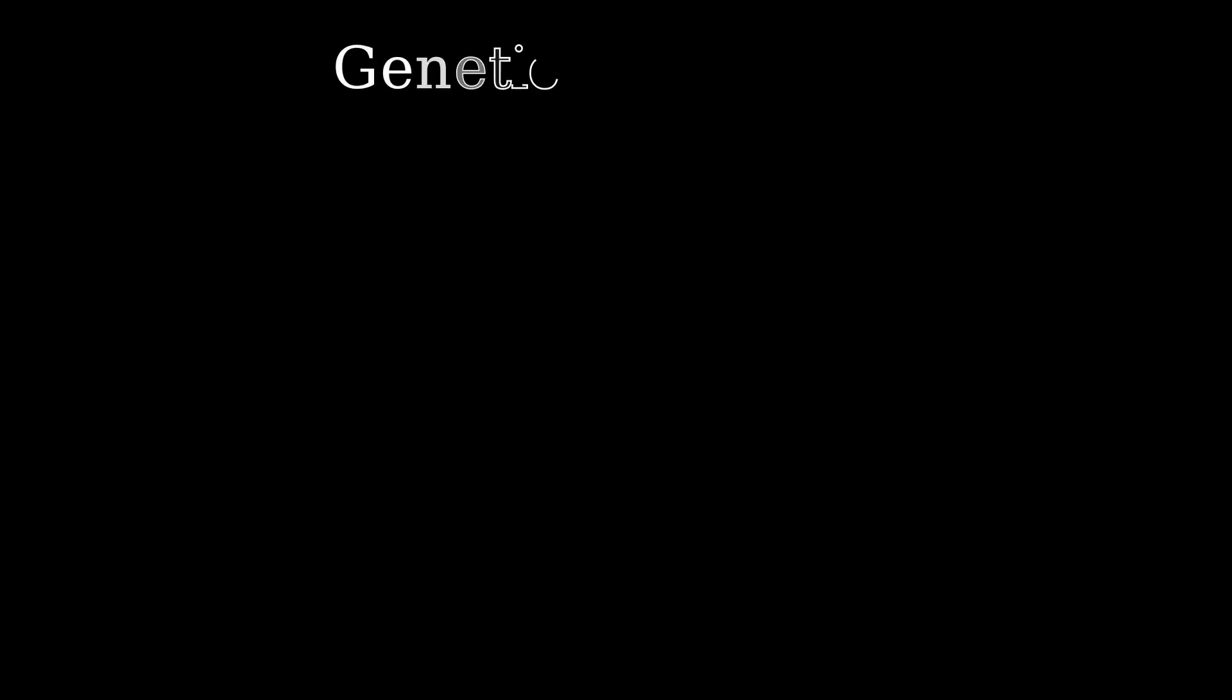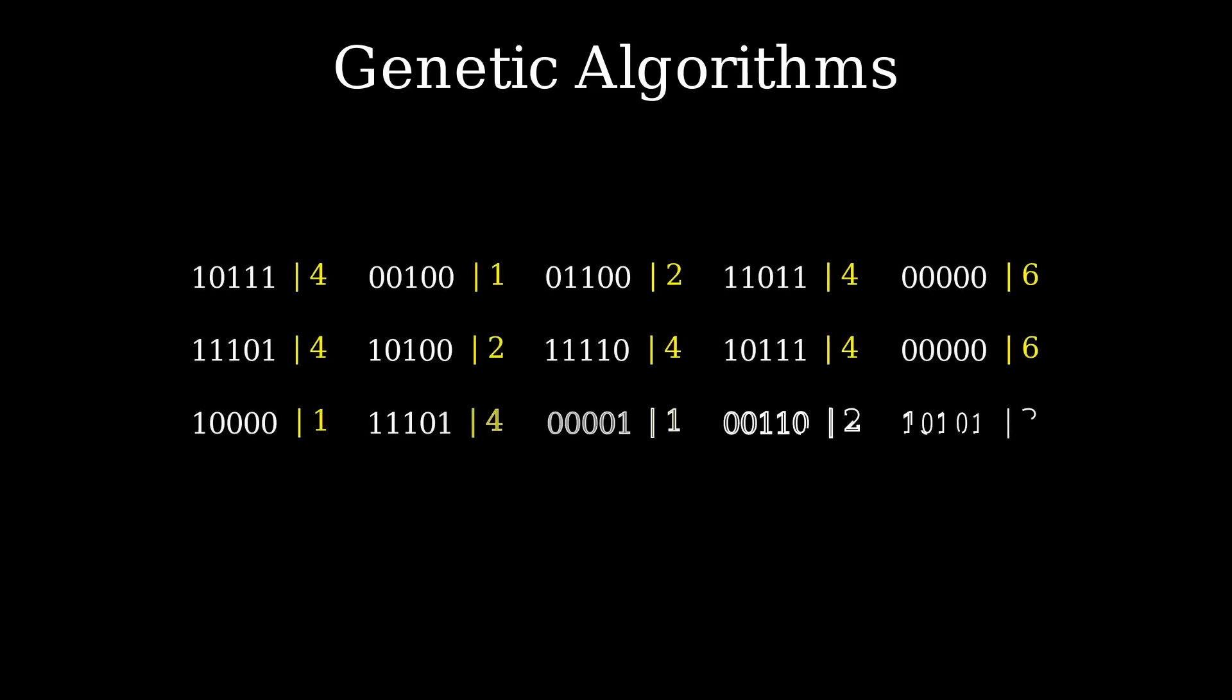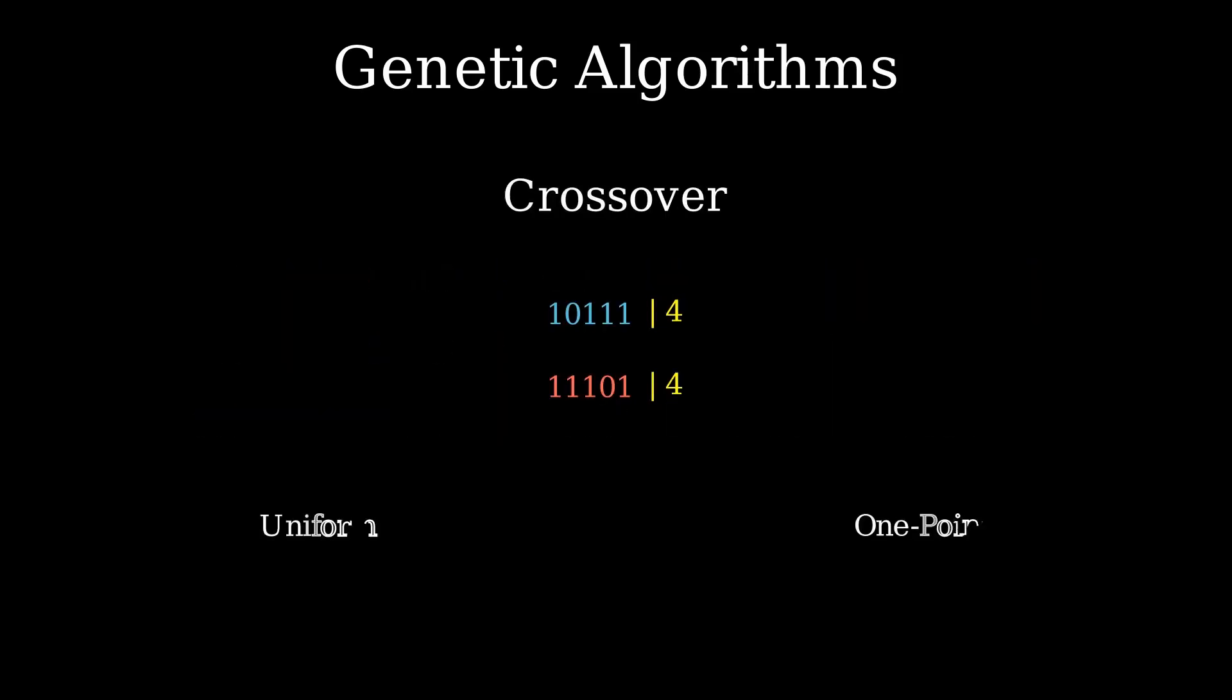Out of all evolutionary algorithms, the genetic algorithm is arguably the closest to original biological evolution. First, we initialize the population with N individuals. Then, while we are not satisfied with our solution set, we select the best individuals and let them create offspring by applying some form of crossover and applying random mutations to the resulting offspring, and repeat.